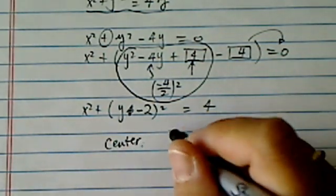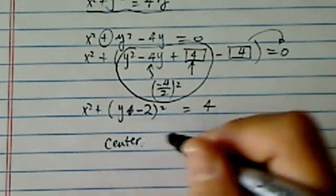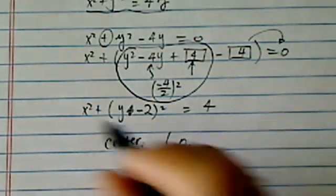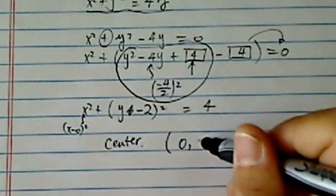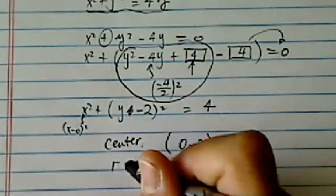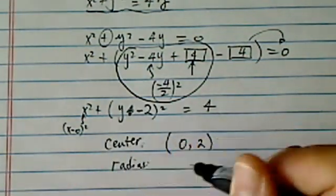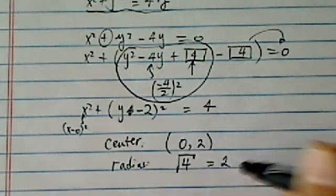Center is at 0 because this one is really x minus 0 squared and y is at 2 with the radius of 4 radical, which is 2.